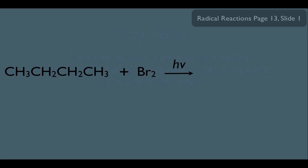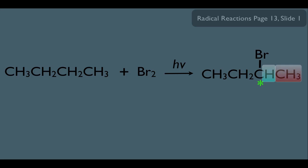This reaction we've already learned the mechanism for — it's the radical addition of Br to an alkane, a substitution reaction where we're replacing a C-H bond with a C-Br bond. Because this reaction is very selective and secondary hydrogens are more likely to be substituted than primary hydrogens, we substitute a C-H bond on one of the secondary carbons with a C-Br bond. Notice that the product creates a chiral center: that carbon has a hydrogen, a methyl group, an ethyl group, and a Br — four different groups that make it chiral.